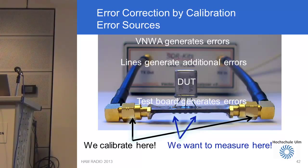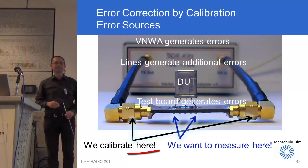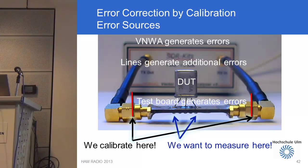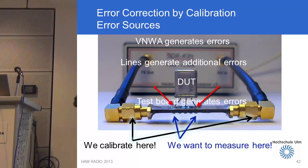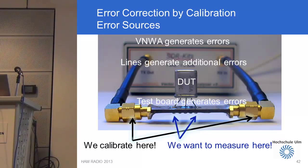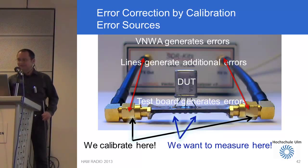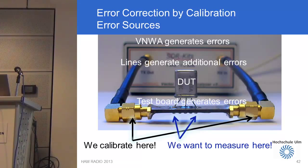By using calibration standards, it is possible to calibrate the VNWA so that at least at the SMA connector — or whatever connector is sitting at the end of the test cables — all errors are removed during a calibration procedure, except for the PCB tracks on the test adapter. We would like to measure the S-parameters directly at the wire terminals of the test object, but the calibration is only correct at the connectors at the end of the test cables. First we must see how to remove all errors in the VNWA itself and the influence from the test cables.